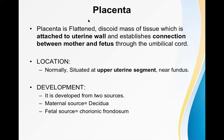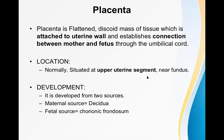The placenta is a flattened disc-shaped mass of tissue attached to the uterine wall. It establishes the connection between mother and fetus through the umbilical cord. The normal location of the placenta is the upper uterine segment, near the fundus. This is always considered normal.